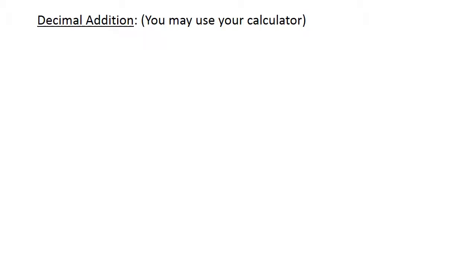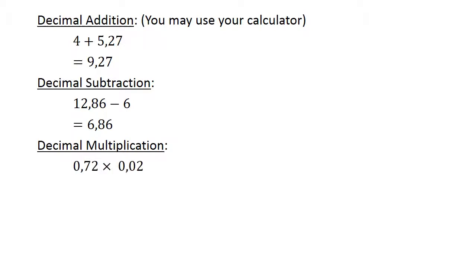Decimal addition: 4 plus 5.27 equals 9.27. Decimal subtraction: 12.86 minus 6 equals 6.86. Decimal multiplication: 0.72 times 0.02 equals 0.0144.